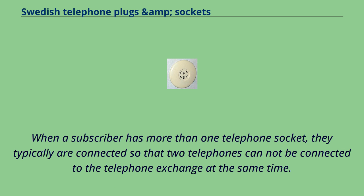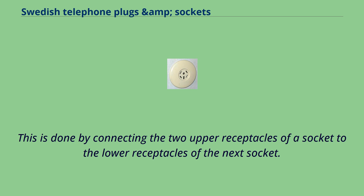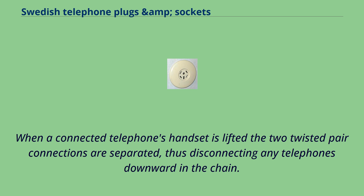When a subscriber has more than one telephone socket, they typically are connected so the two telephones cannot be connected to the telephone exchange at the same time. This is done by connecting the two upper receptacles of a socket to the lower receptacles of the next socket. When a connected telephone's handset is lifted, the two twisted pair connections are separated, thus disconnecting any telephones downward in the chain.